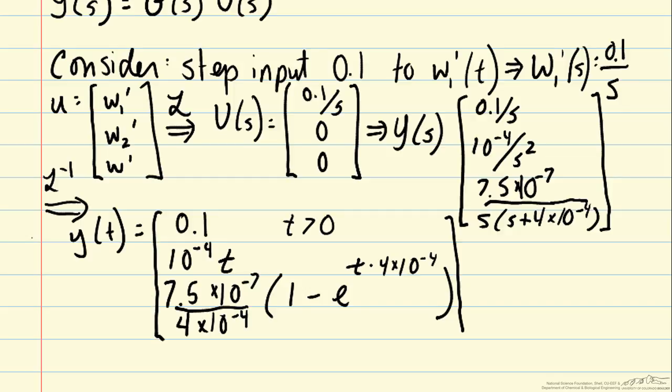Here we've gotten the solution for all three of our measurements: w1, the disturbance variable, as well as the volume in the tank and the mass fraction of the tank in deviation variables. And we've done that using a single matrix equation.